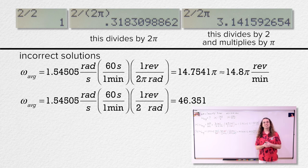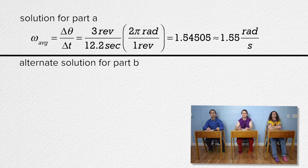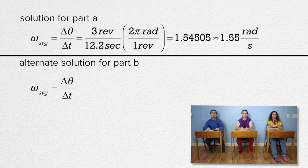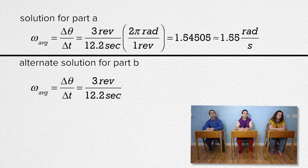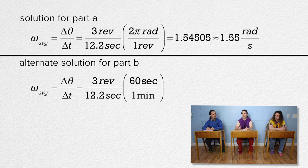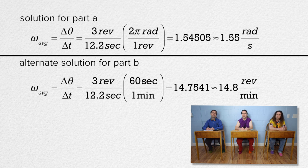Mr. P, for part b, could we not just go back to the equation for average angular velocity and divide 3 revolutions by 12.2 seconds and then convert by multiplying by 60 seconds over 1 minute to get the same 14.8 revolutions per minute? Absolutely, Bobby. We could solve it that way and in the future you certainly should.